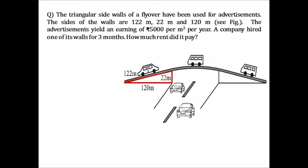We need to find how much rent the company paid. For this, first and foremost, we need to find out the area of the triangular wall. After getting the area, since the rate is given per year but the company is hiring for only three months, we need to find the rate per month and then find the rent for three months. Let's start.